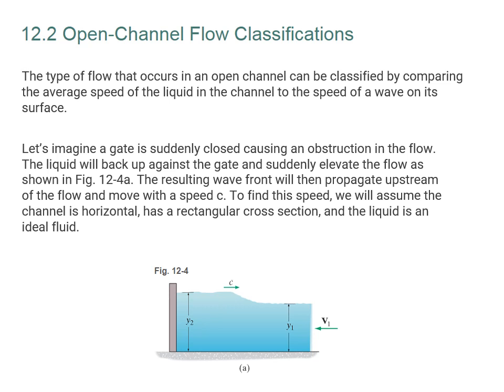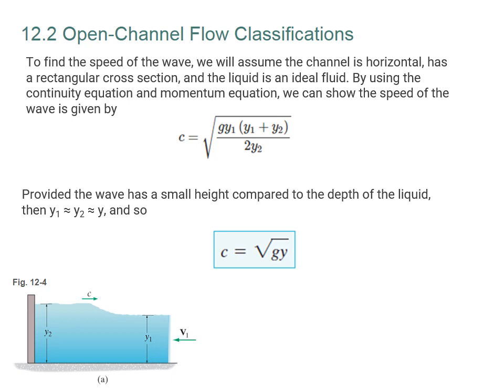Assuming the channel is horizontal with a rectangular cross section and the liquid is an ideal fluid, and using the continuity equation and the momentum equation, we can show the speed of the wave is given by an equation. Provided the wave has a small height compared to the depth of the fluid, Y1 and Y2 are approximately equal, so we call them Y. The equation simplifies to: the speed of the wave C equals the square root of g times Y, where g is the acceleration of gravity and Y is the average depth in the channel. The wave speed is directly proportional to the square root of the water depth.